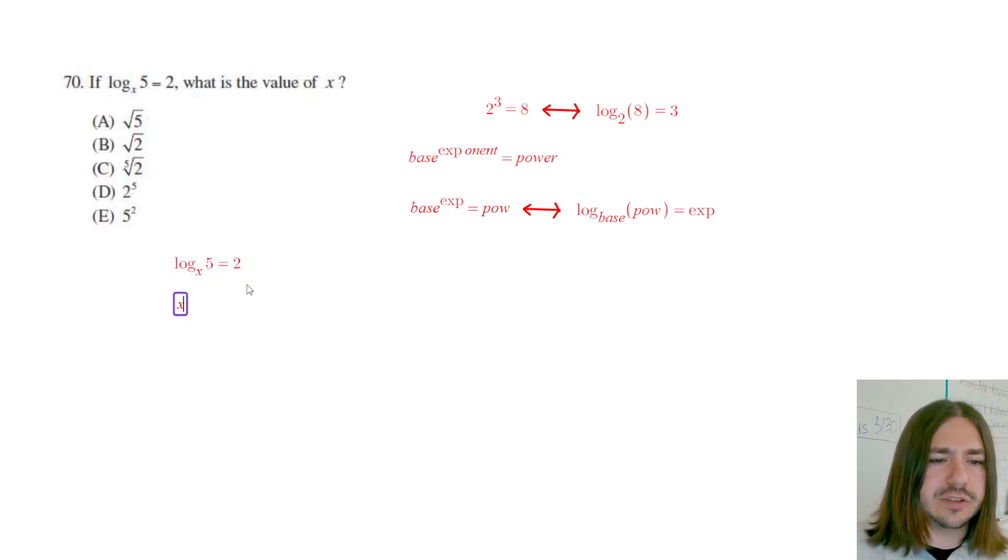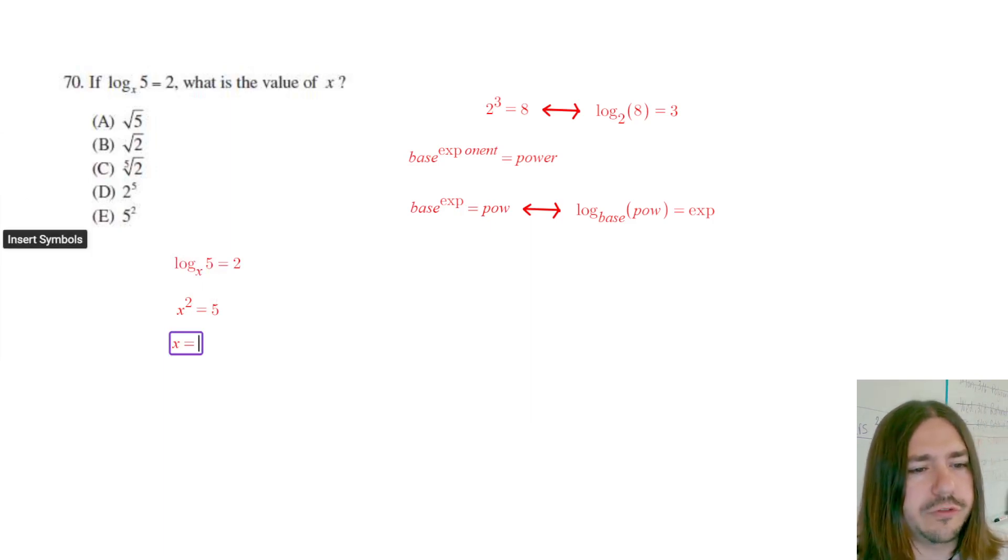So if I want to rearrange this, it's going to be x raised to the exponent of 2 equals 5. And then to solve this, I need to take the square root of both sides, so I get x equals root 5.